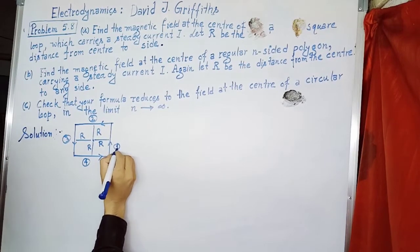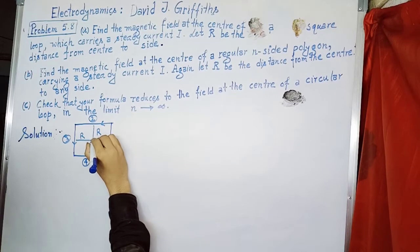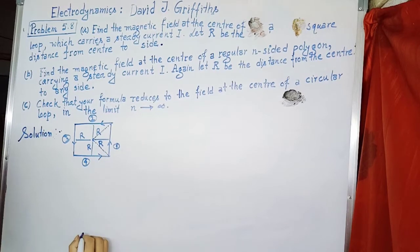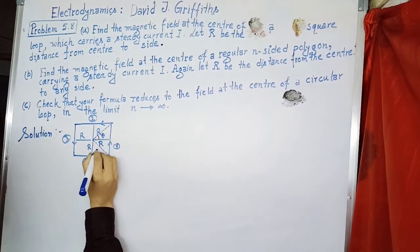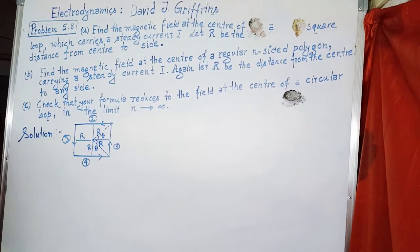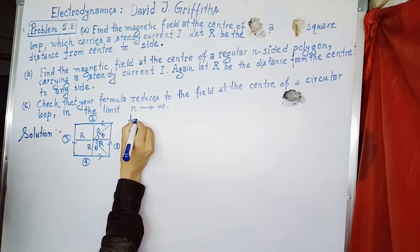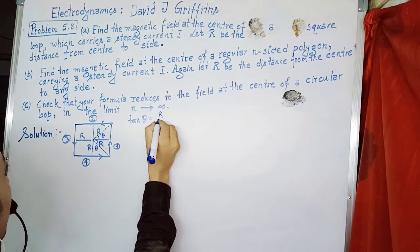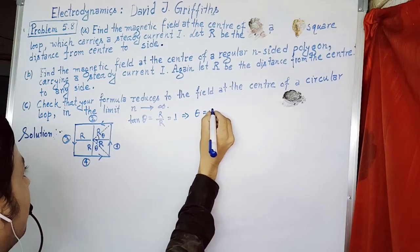Now we'll find the magnetic field produced due to segment 1. To do this, we join the endpoints of this segment to the center of the loop. By symmetry, both angles are equal to theta. From simple trigonometry, tan theta equals R upon R, which equals 1. Therefore, theta is equal to π/4.